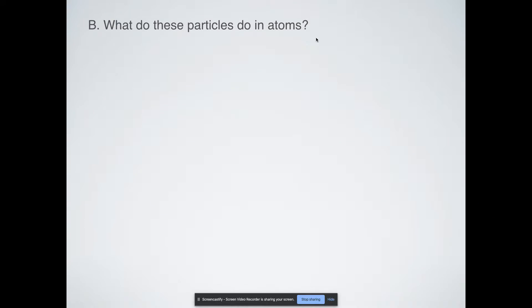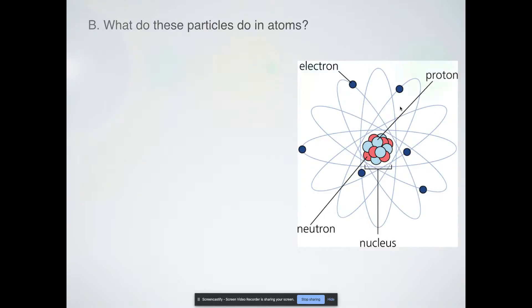So what do these particles do? Protons designate which element is which. So if you change the number of protons you change the element. For example hydrogen has one proton. If you add another one to hydrogen that makes it helium. It's no longer hydrogen anymore. Even if you don't change the neutrons or the electrons or anything else. So two protons is helium whereas if you look at your periodic table number 26 is iron, Fe.